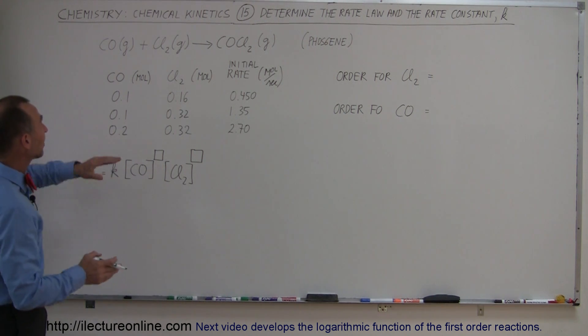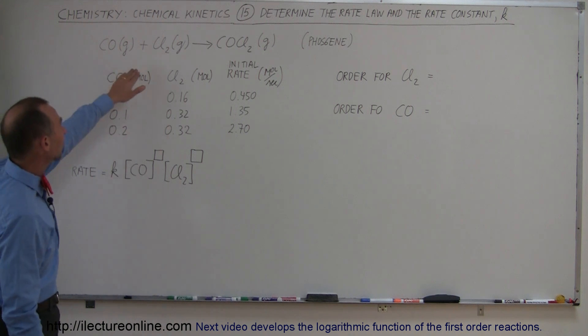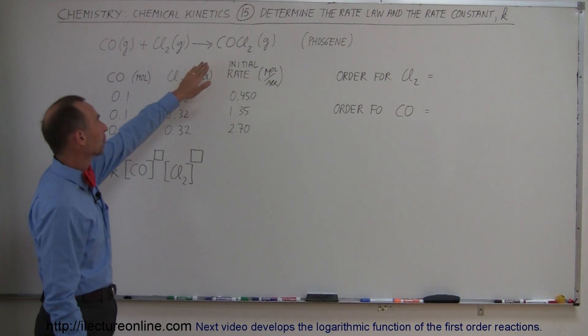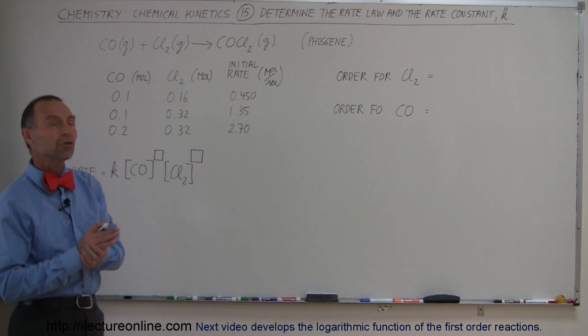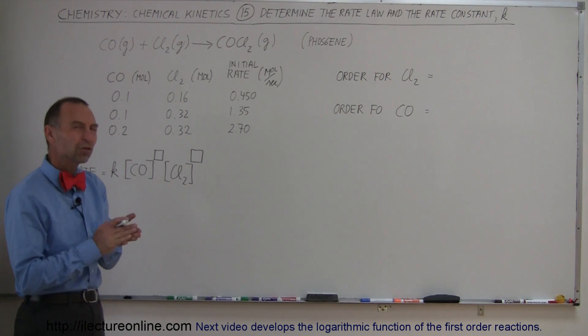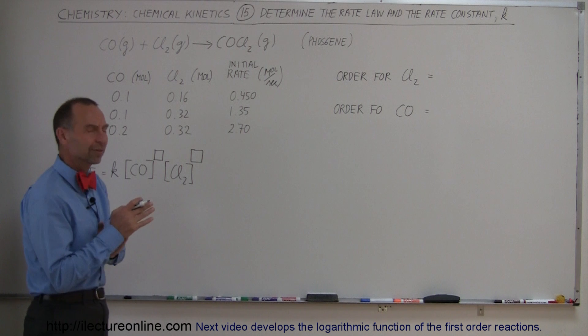Here we have an example: carbon monoxide gas mixed with chlorine gas to form carbon monoxide dichloride. That's also known as phosgene gas — it's a poisonous, odorous gas, very nasty stuff.